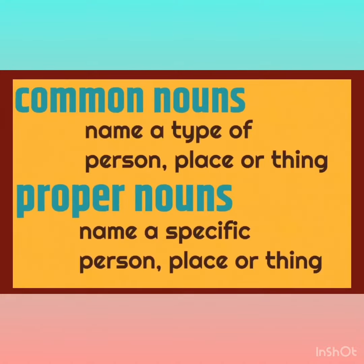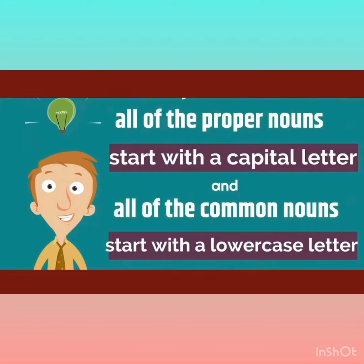Now we will learn two types of nouns: common noun and proper noun. Common nouns name a type of person, place, or thing. Proper nouns name a specific person, place, or thing. All proper nouns start with a capital letter, and all common nouns start with a lowercase letter.